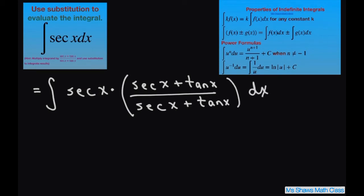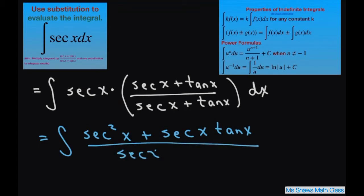When you get this, our integral is going to be (secant squared x plus secant x tan x) all divided by (secant x plus tan x) dx.